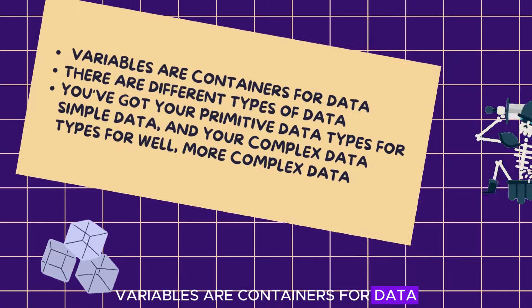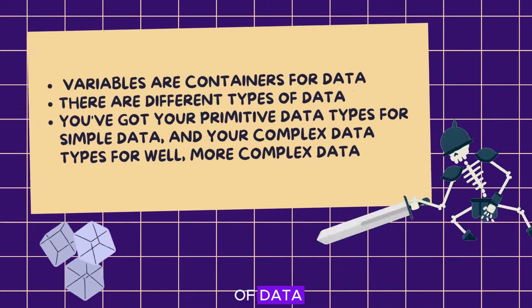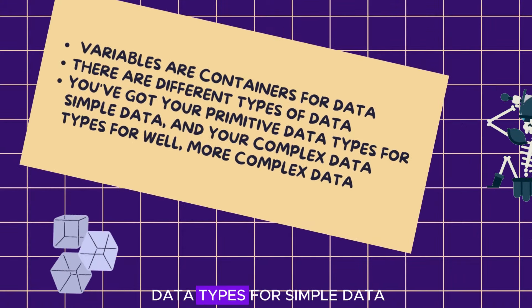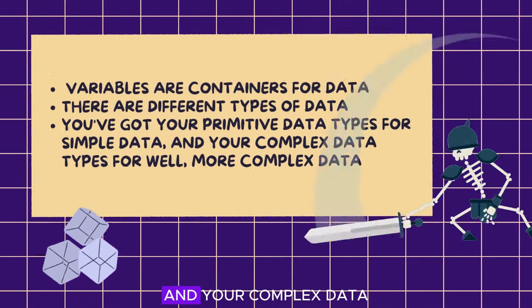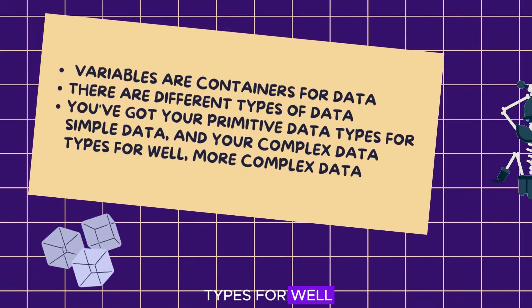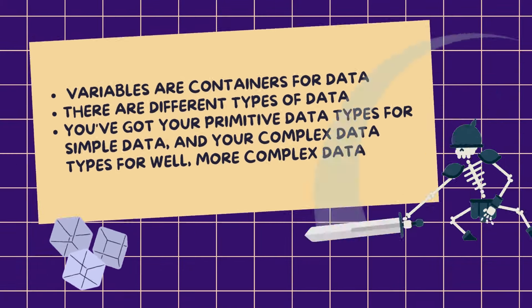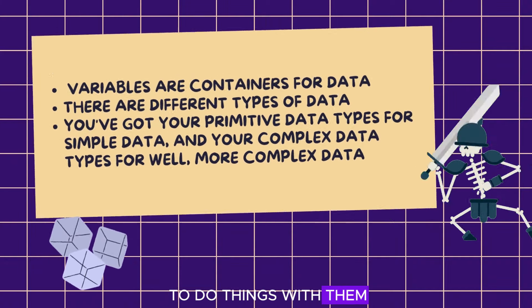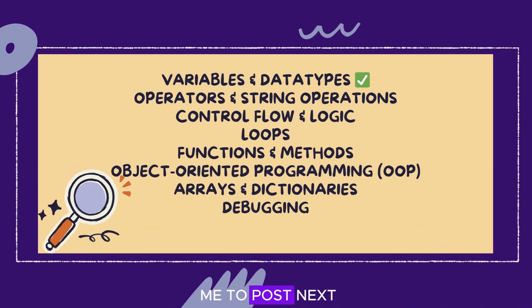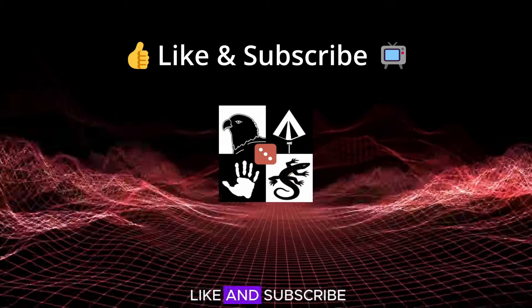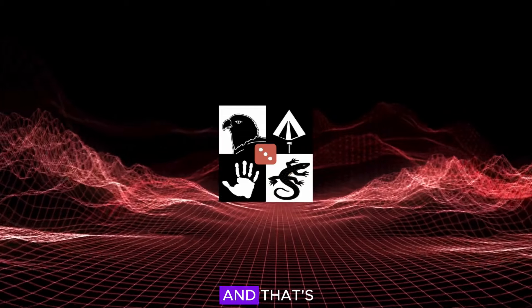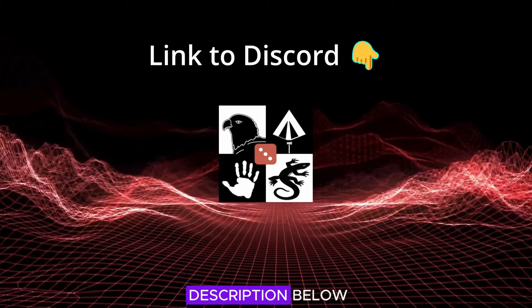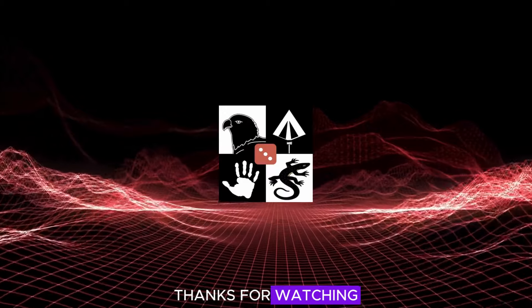So, to recap: variables are containers for data. There are different types of data — you've got your primitive data types for simple data and your complex data types for more complex data. Now that you know how to store data, perhaps you would like to do things with them. What would you like me to post next? A quick reminder to like and subscribe to follow the series, and the link to our Discord is in the description below. Thanks for watching!